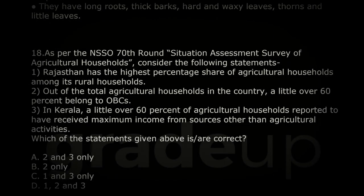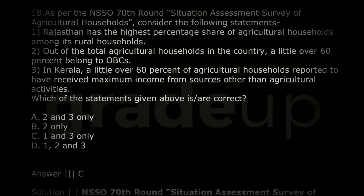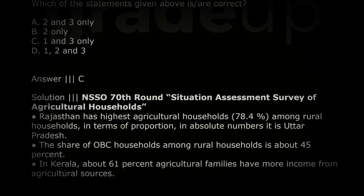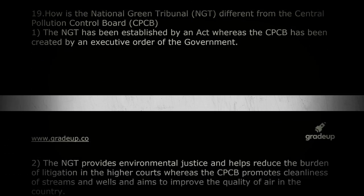As per the NSSO 70th Round Situation Assessment Survey of Agricultural Households, the correct statements are: first, Rajasthan has the highest percentage share of agricultural households amongst rural households; and second, in Kerala, a little over 60% of agricultural households reported receiving maximum income from sources other than agricultural activities. The share of OBC households among rural households is about 45%, which is less than 50%.